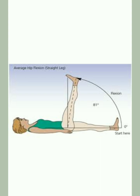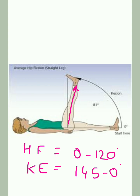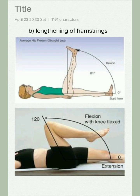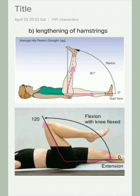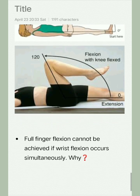The normal full range of hip flexion is about 0 to 120 degrees and knee extension is about 145 to 0 degrees. You will see that knee extension is occurring at 0 degrees here, but hip flexion is not equal to 120 degrees. The second image is for comparison, showing full range of hip flexion which is not achieved in the first image. Another example: full finger flexion cannot be achieved if wrist flexion occurs simultaneously — the reason is left as a comment challenge for viewers.